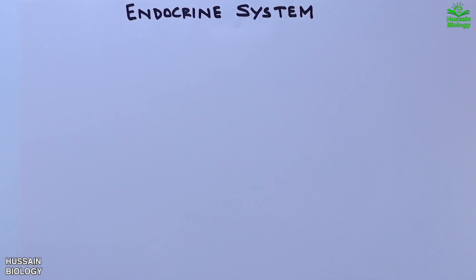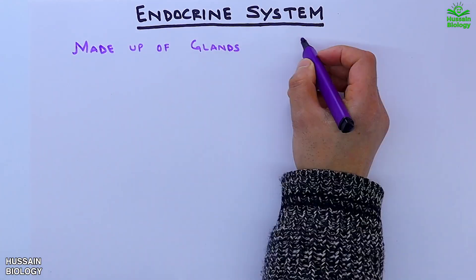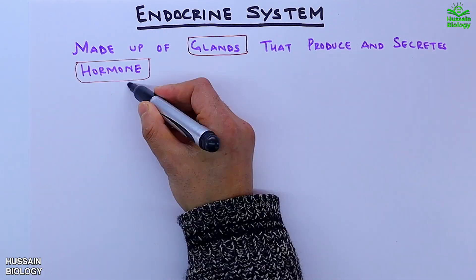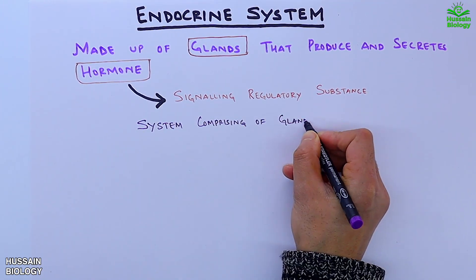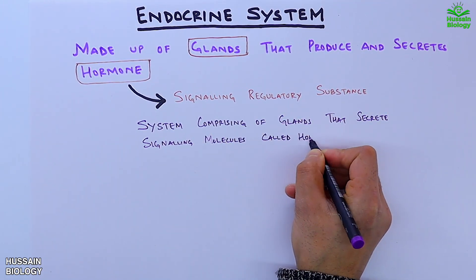We know this endocrine system is made up of glands that produce and secrete hormones. The hormones are signaling regulatory substances that act as chemical messengers and are secreted within the circulatory system. So all in all, we can say it is a system comprising of glands that secrete signaling molecules called hormones in the circulatory system.